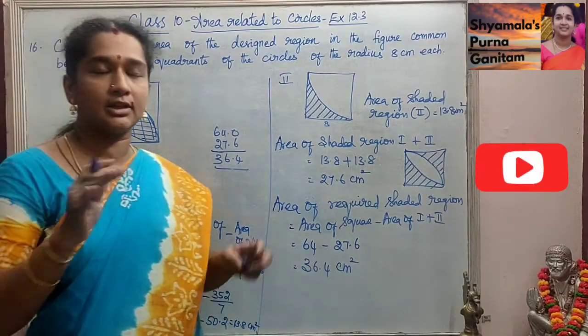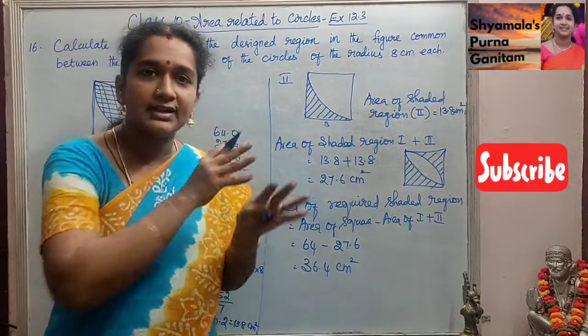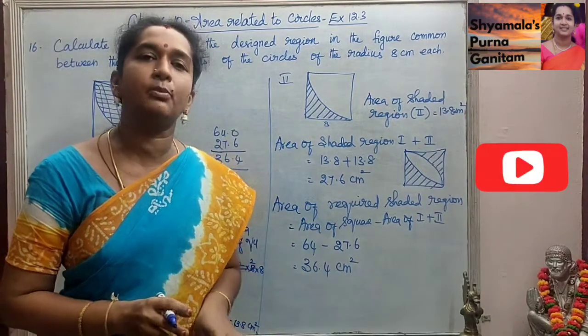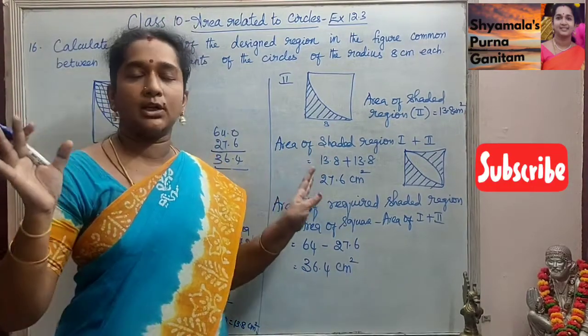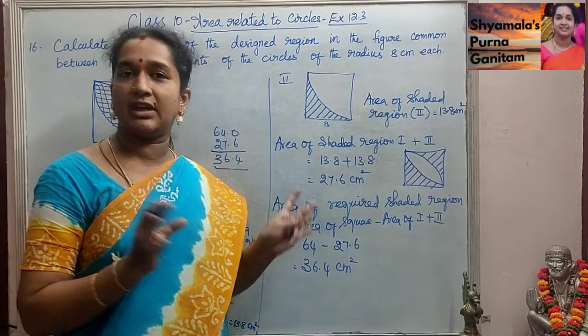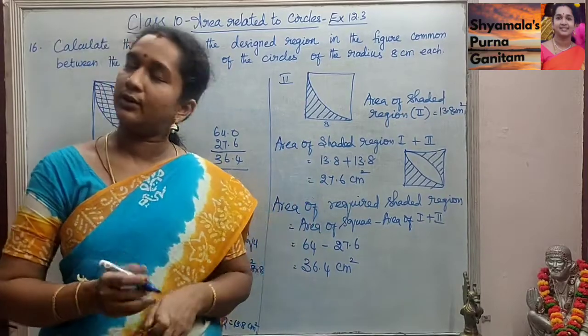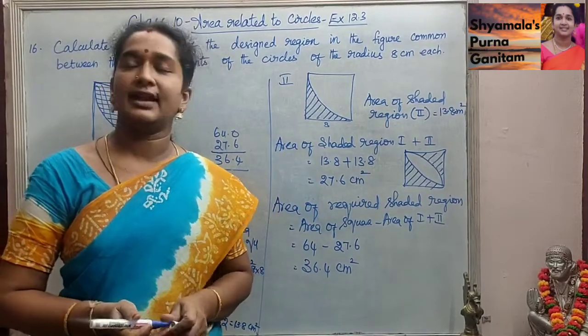So 36.4 cm² is the area of the required shaded region. This is how it has to be solved. If you understand the question properly and whatever they are asking, we can be able to find it. Thank you.